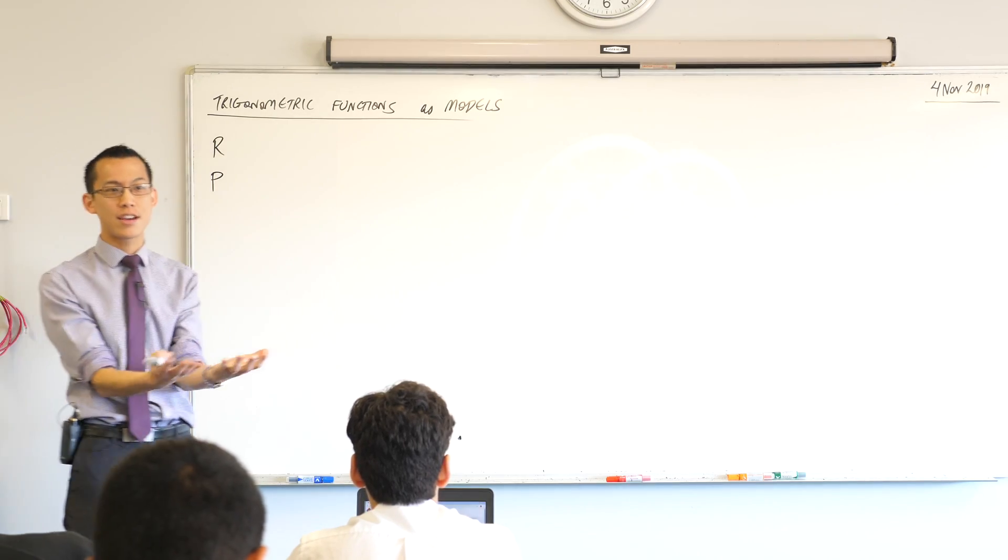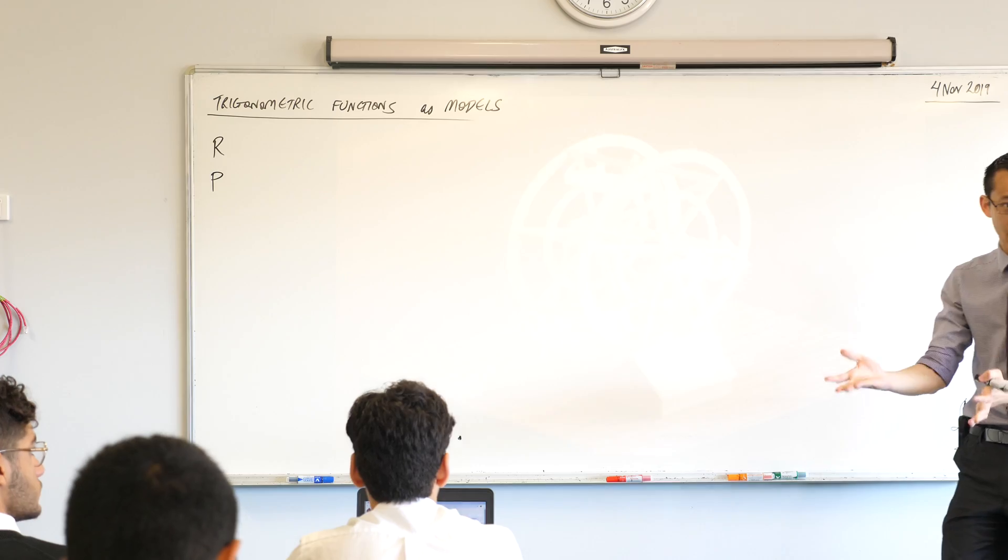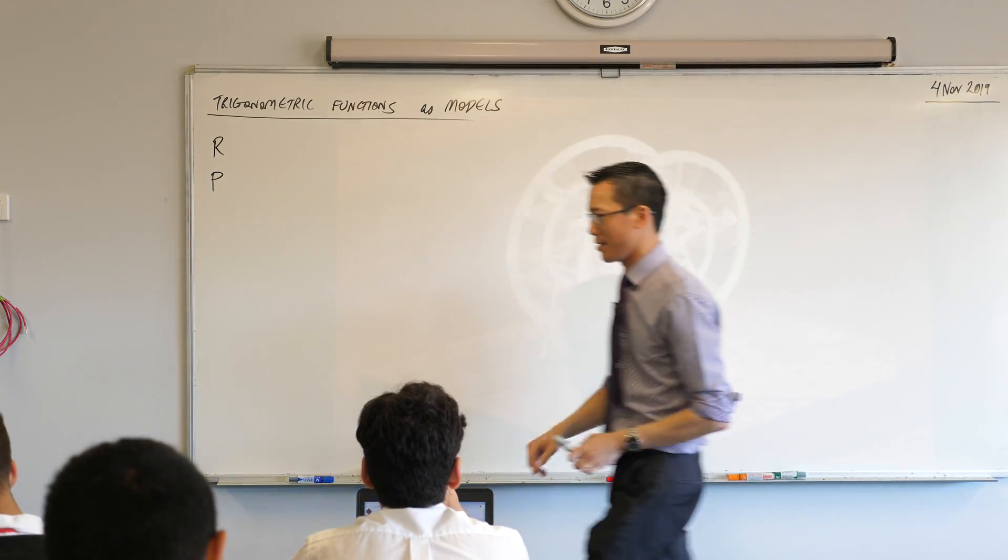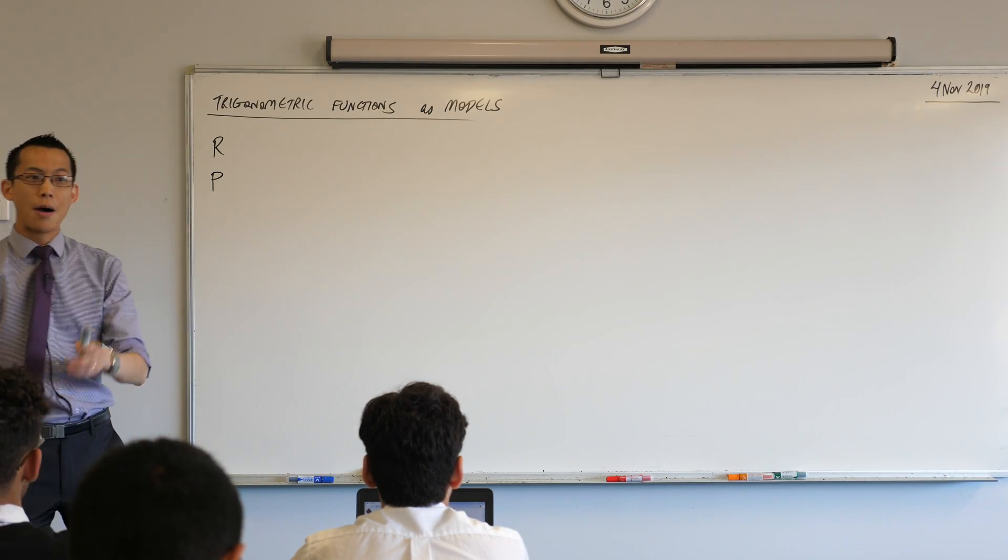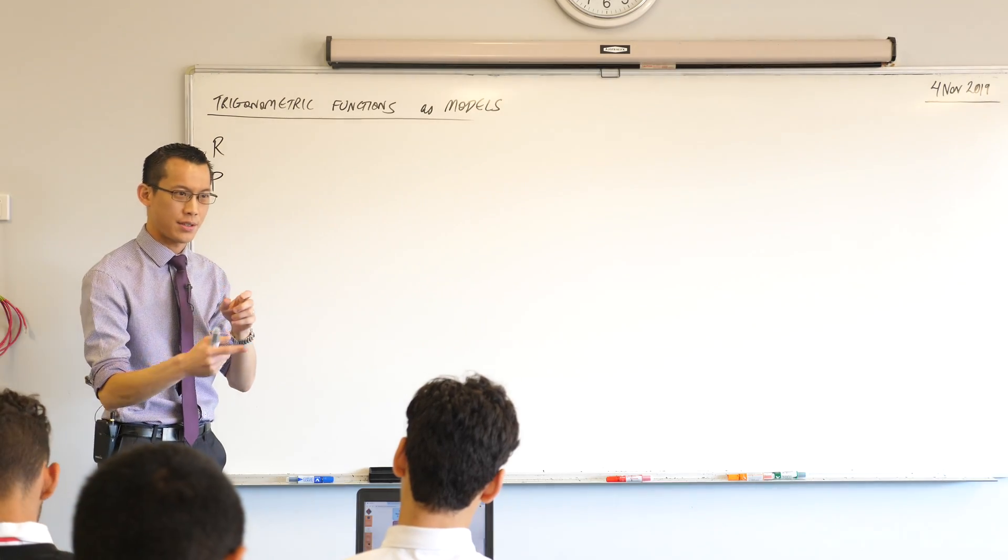Now I'm going to say right out the gate, usually you will get given a model. You'll get given an equation, you just have to interpret it. But we're going to use technology to be able to produce this equation ourselves. And in the future, when you see the equation, I want you to understand, oh, this is what the bits mean, rather than just get handed it. So here's the Ferris wheel. I'm going to stop it for a second because it's distracting me because it's spinning so fast.